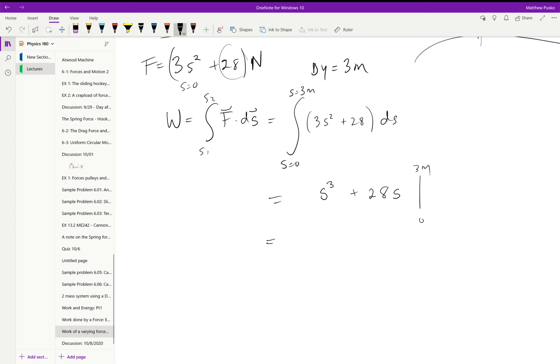And at 0, the whole thing's going to vanish. We can just evaluate it at 3 meters. I get 3 to the third plus 28 times 3. Now that is the amount of work done to lift the beam. That's the work done by the force.